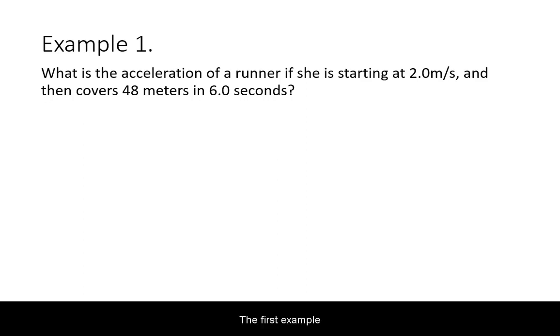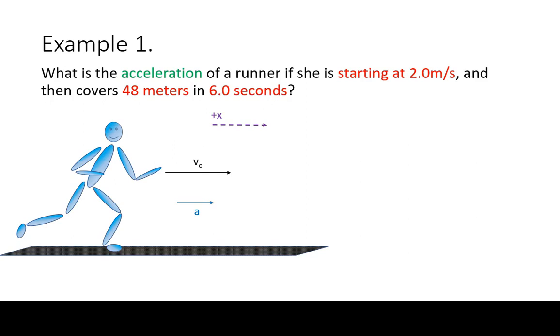The first example asks you to calculate the acceleration of a runner based on other quantities. Read the problem for kinematic variables and draw the picture to keep track of them. Define your coordinate system. Highlight what is being asked for.